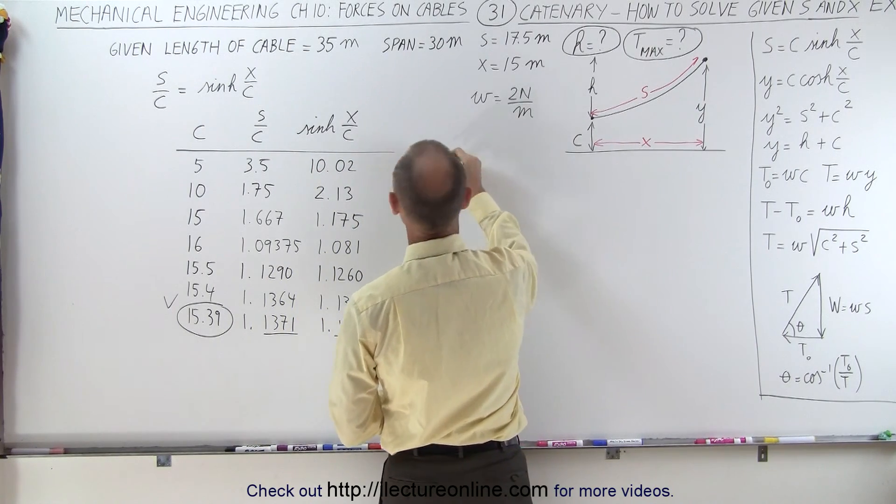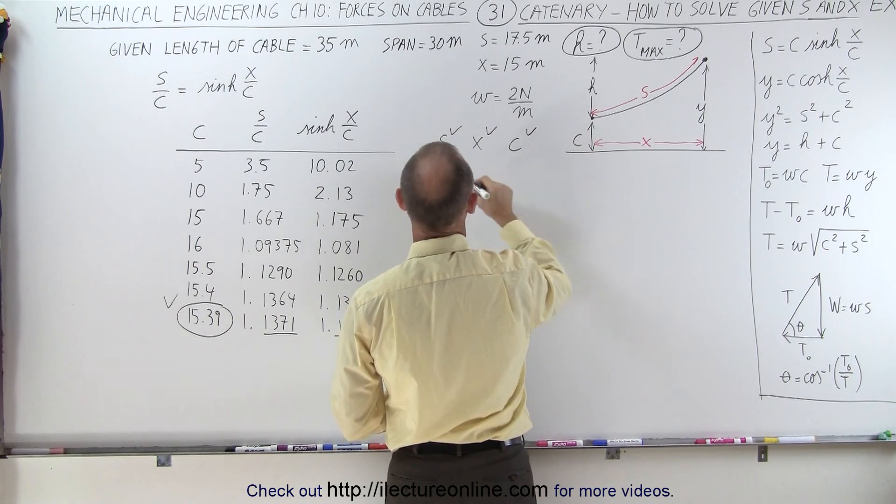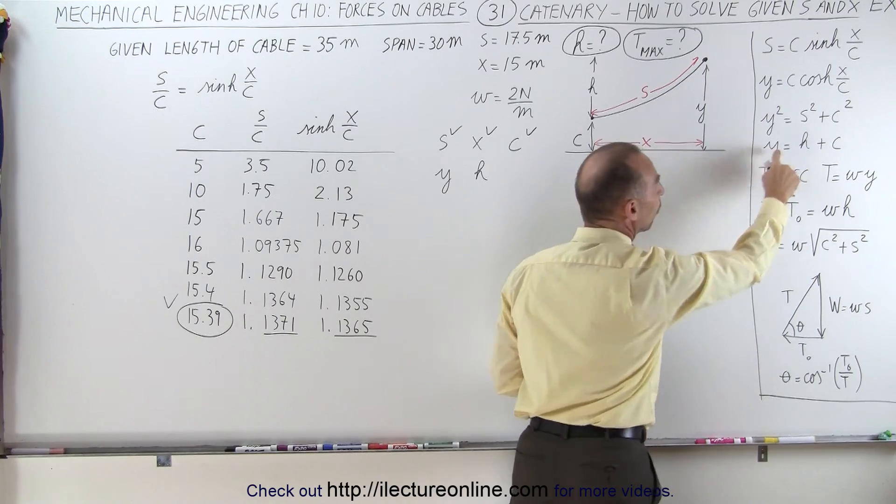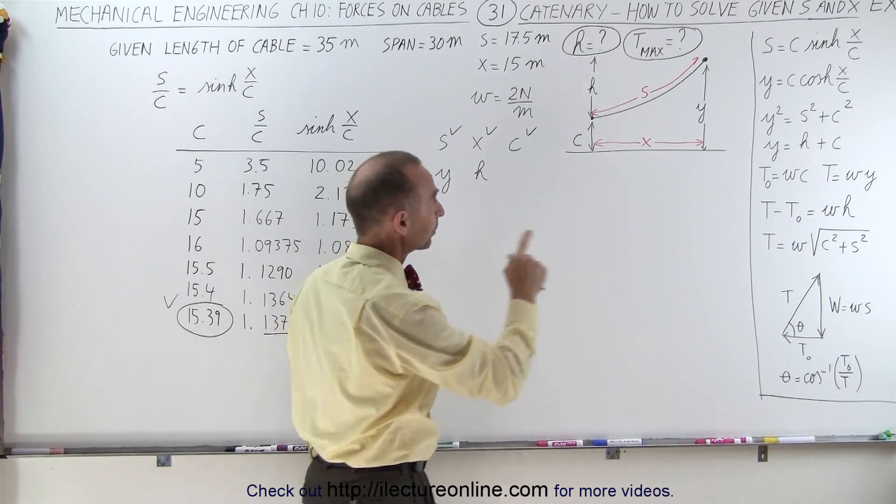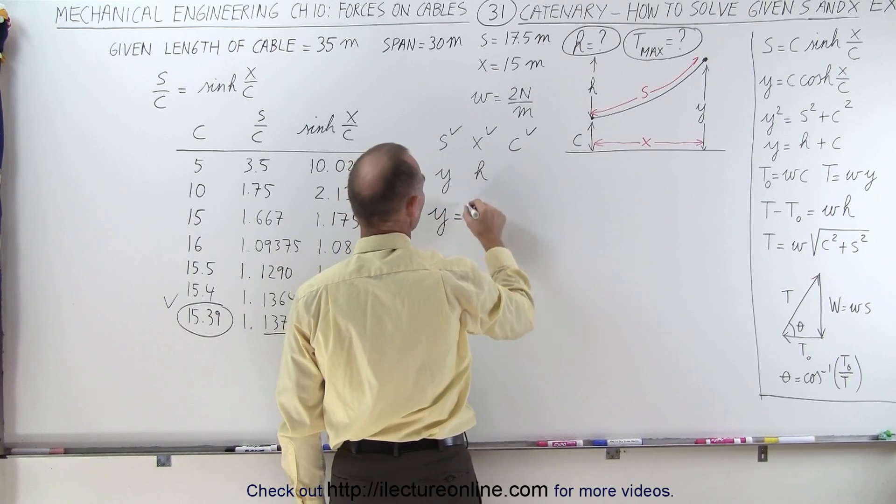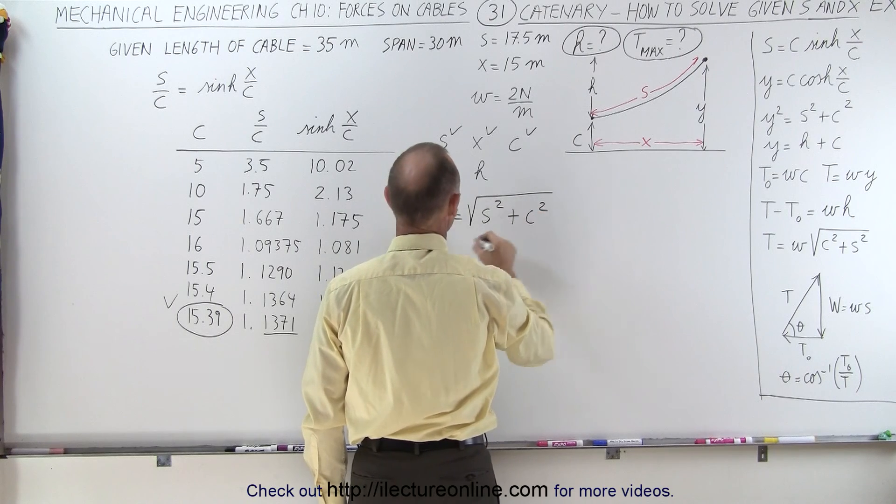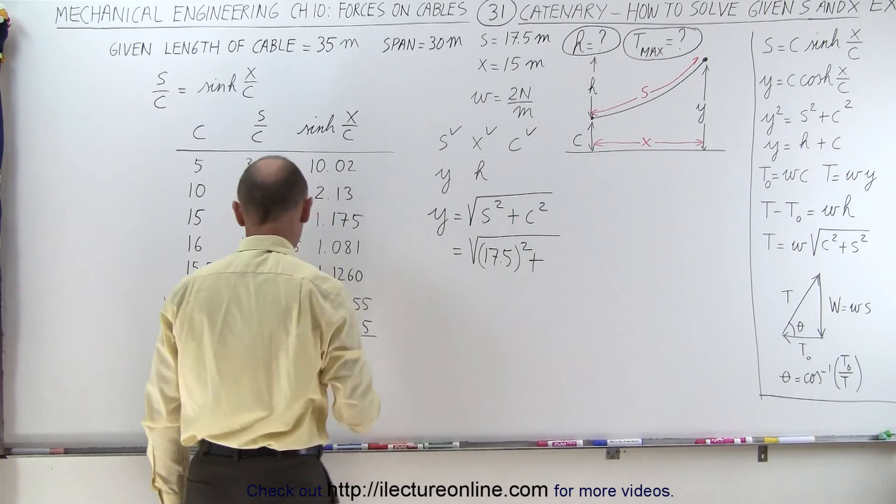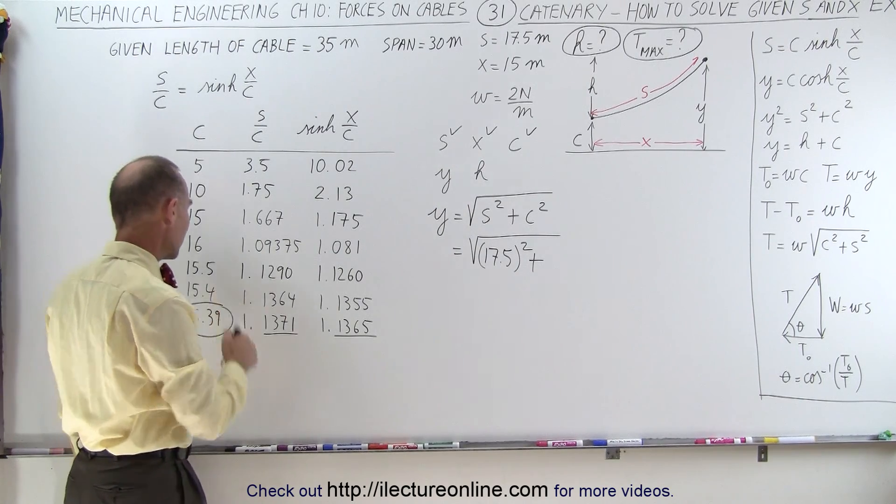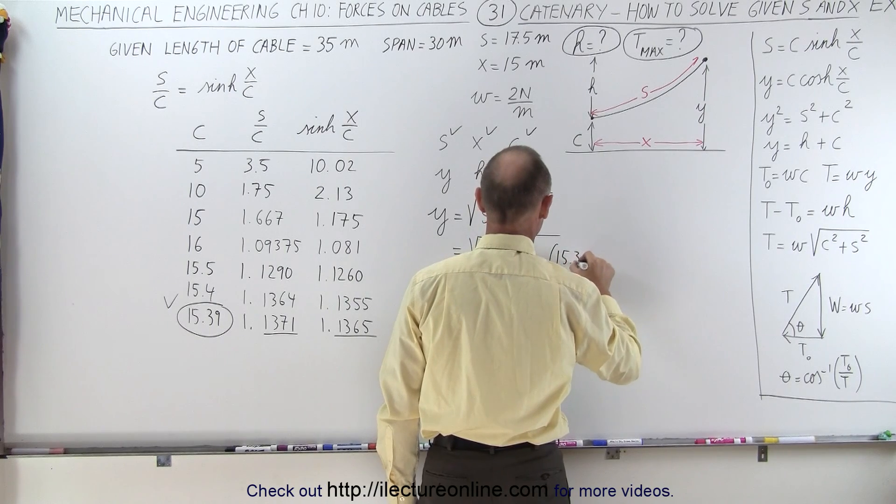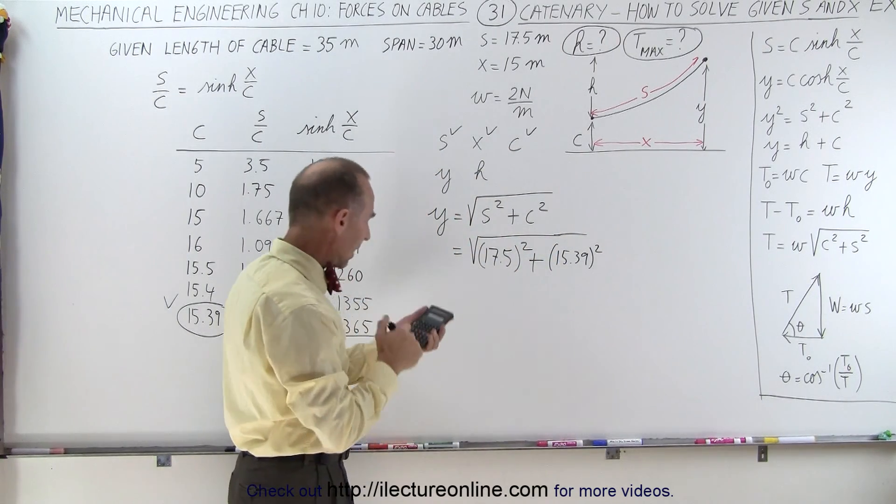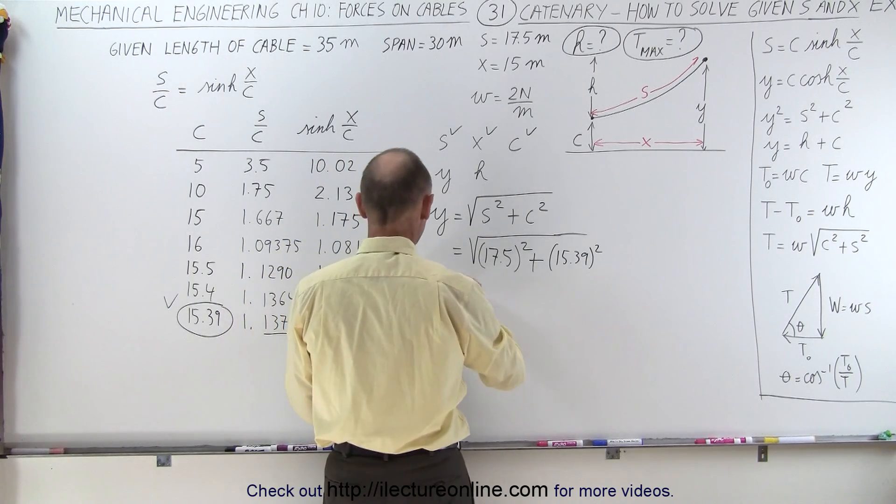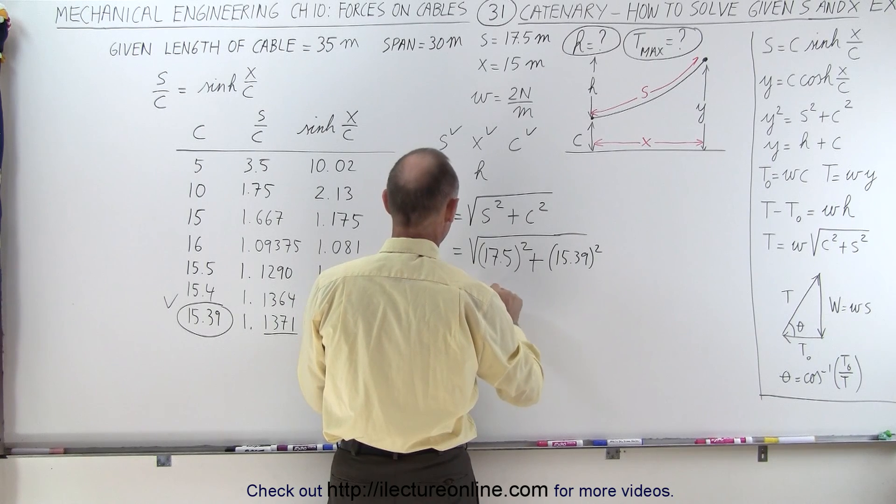We have S, we have X, we have C. We still need Y, and we still need H. We're looking for H, but we can't find H until we find Y first. We use this equation right here. Y equals the square root of S squared plus C squared. That's the square root of 17.5 squared plus 15.39 squared. Take the square root and we have Y equals 23.3 meters.